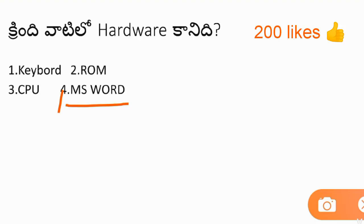For hardware, examples include: keyboard, mouse, monitor, printer, hard disk, CPU, RAM, and ROM. For software, examples include MS Word, MS Excel, programs like Photoshop. So the question comes from hardware and software distinctions.